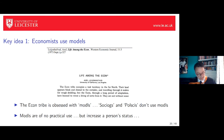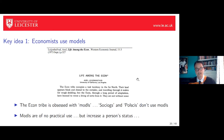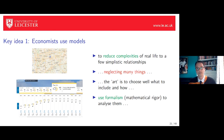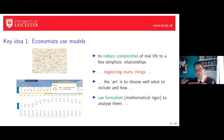We all use models in daily life. Here's one: a map of the Ruhr Valley, which reduces the complexity of real life to a few simplified relationships, necessarily neglecting many things. The same is true of a weather forecast for Leicester. The art is to choose well what to include and what not. Economists use such models and then apply mathematical rigor to analyze them.